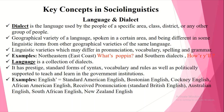Another concept in sociolinguistics is language and dialect. Dialect is the language used by the people of a specific area, class, district, or any other group of people. It is a geographical variety of a language spoken in a certain area, differing in some linguistic items from other geographical varieties of the same language. Linguistic varieties which may differ in pronunciation, vocabulary, spelling, and grammar are called dialects. Examples include northeastern, east coast, and southern dialects in American English.